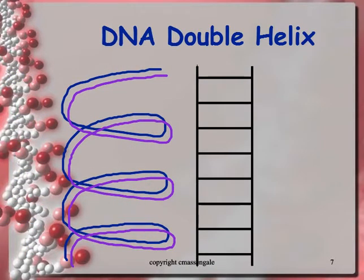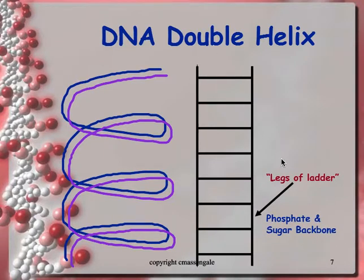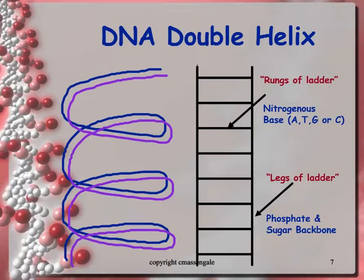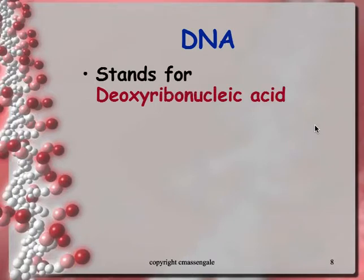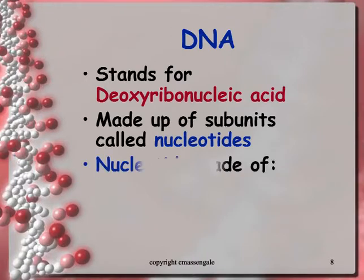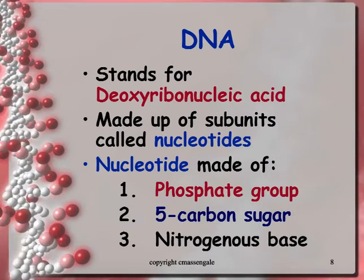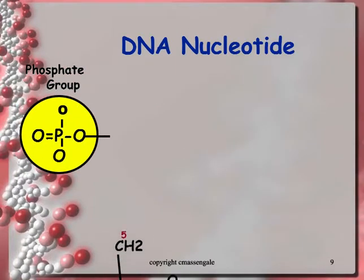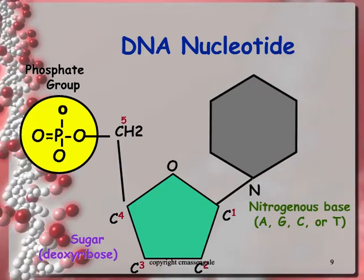This is a drawing of the double helix — the twisted ladder. The sides of the ladder are the phosphate and the sugar, and the rungs of the ladder are the nitrogenous bases: A, T, G, and C. DNA stands for deoxyribonucleic acid and it's made up of nucleotides. Nucleotides are made up of a phosphate group, a five-carbon sugar, and a nitrogenous base. Here's a visual of that.